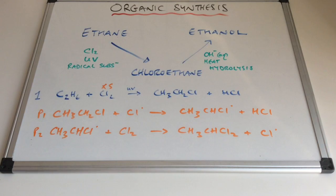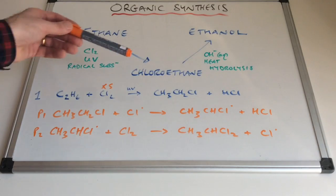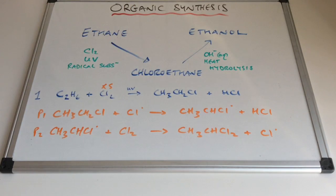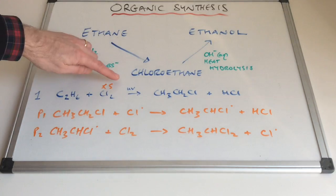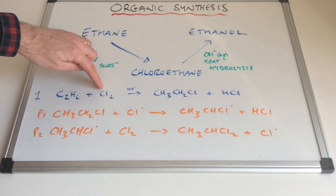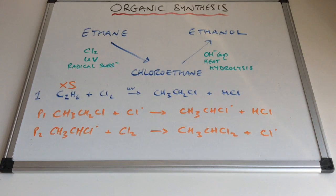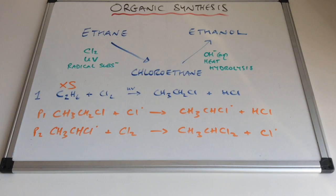To prevent that from happening, instead of chlorine being in excess, we would need to make the alkane the chemical in excess. That's an example of a question that could be asked to really test your knowledge of the chemistry behind the synthesis.